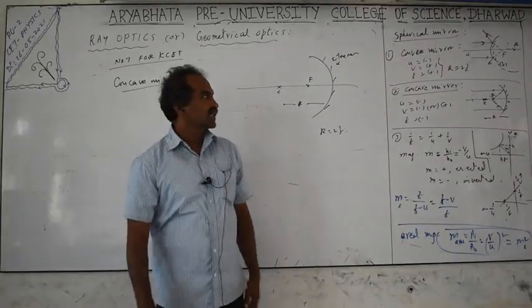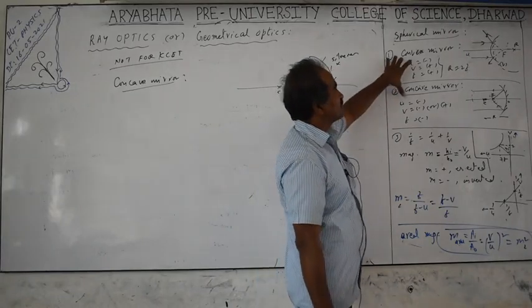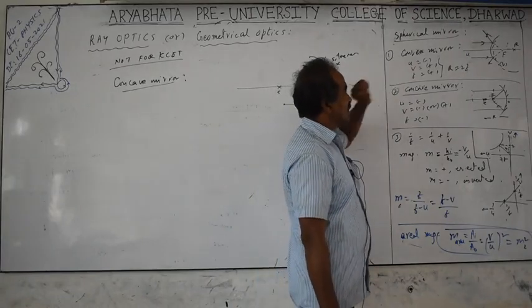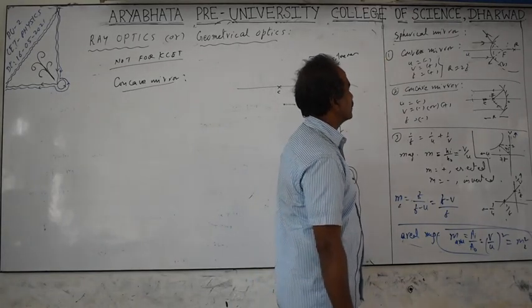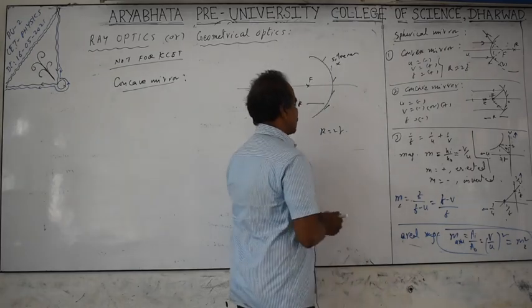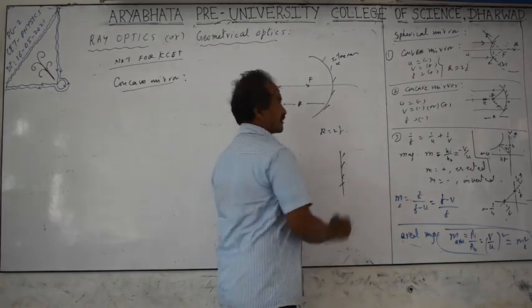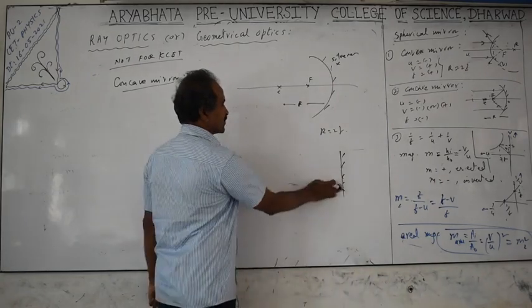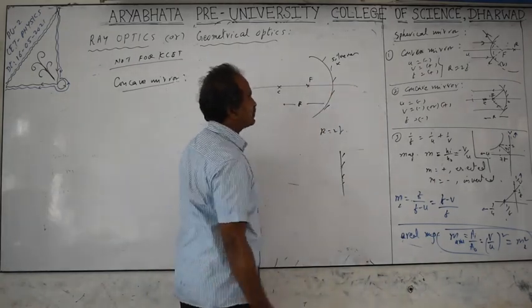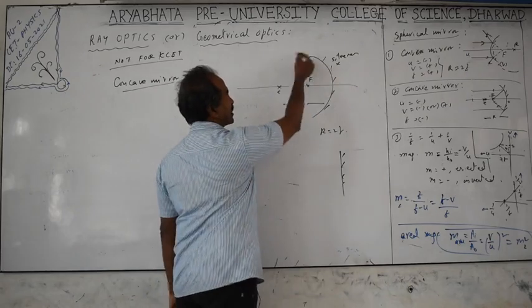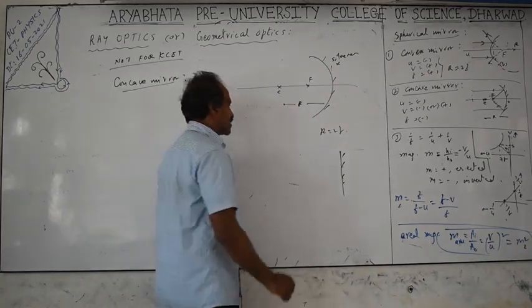In the previous class we discussed the points related to the convex mirror. Convex and concave mirrors are called spherical mirrors, and a plane mirror is a two-dimensional plane surface. We call concave and convex mirrors spherical mirrors because they are part of spheres. What about the plane mirror? It is also part of a spherical mirror.